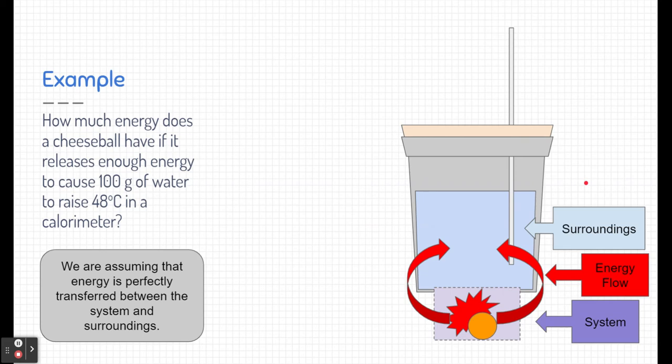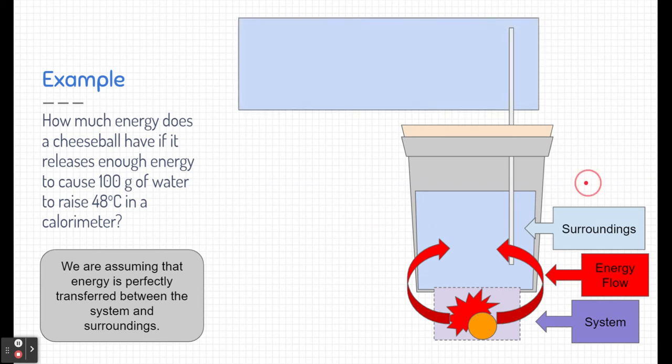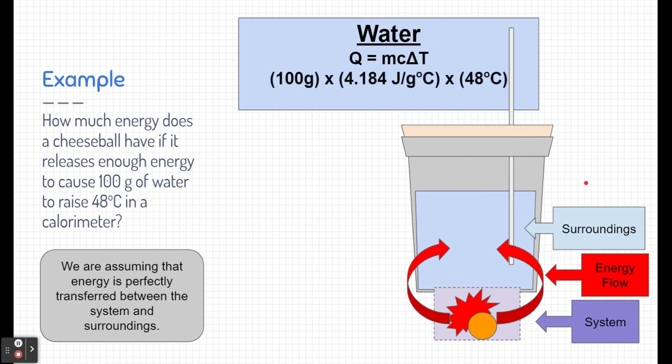So to do calorimetry, we actually are going to focus on the water or the surroundings. We know a lot about the water. We know the mass of the water is 100 grams. We know the specific heat of water is the standard, which is 4.184 joules per gram Celsius. That's how much energy it takes to change one gram of water by one degree Celsius. And we also know the temperature change of water. It's 48 degrees Celsius in total.